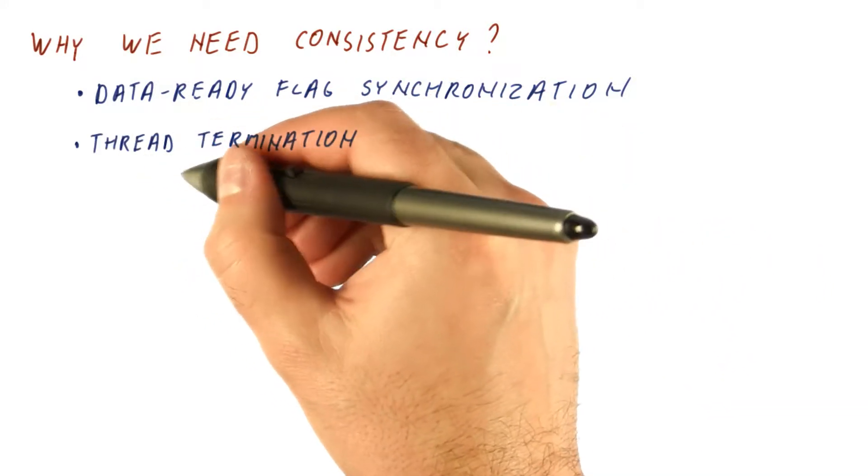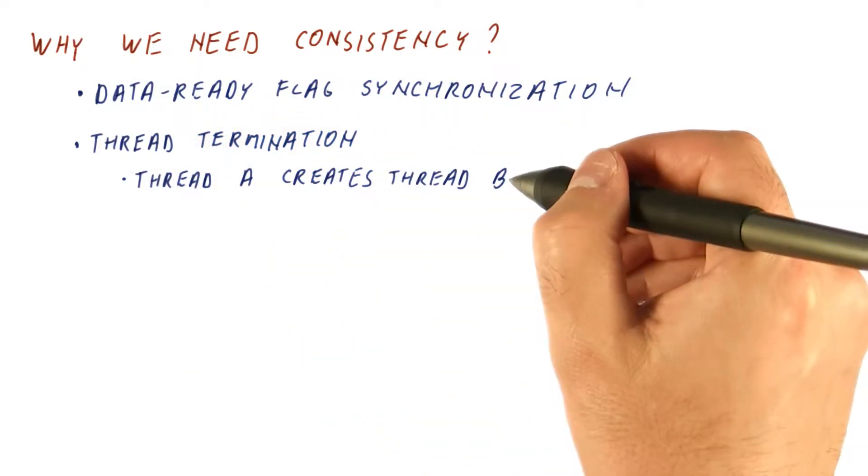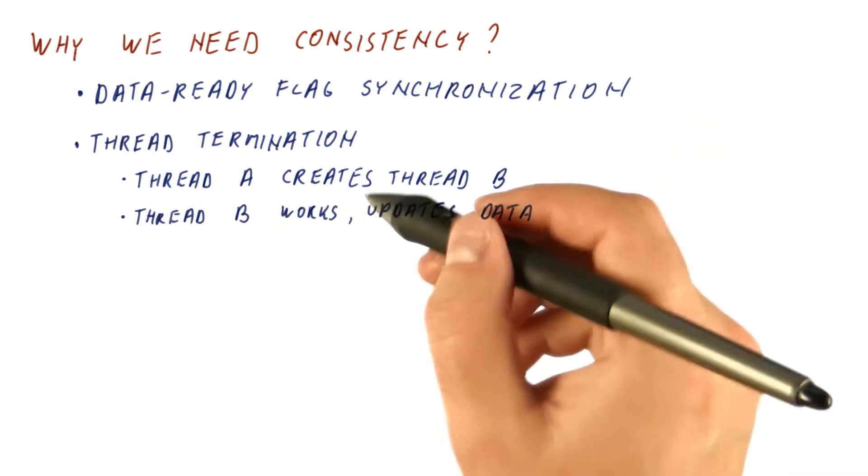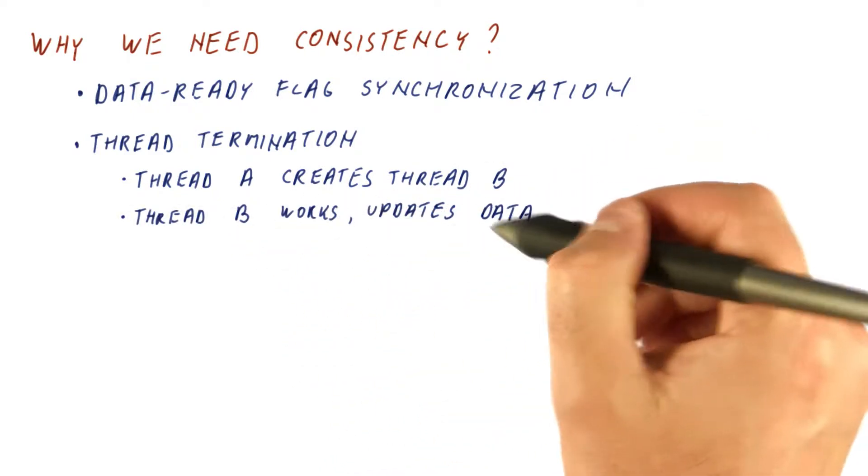Another similar example is thread termination, where a thread creates another thread. Now that created thread, let's call it B, does a lot of work and updates some data,